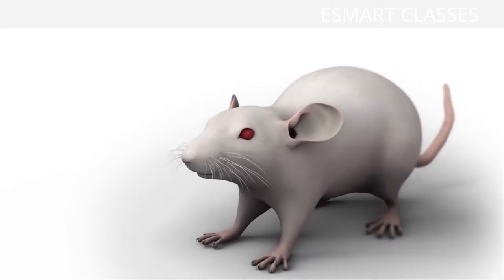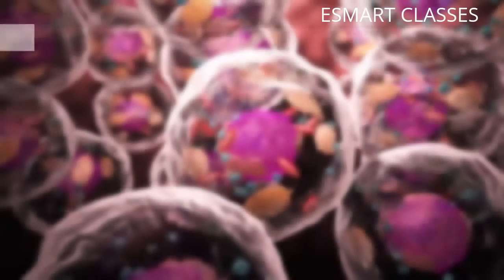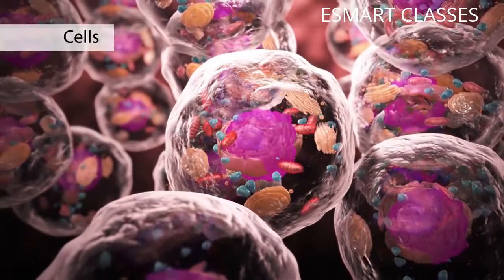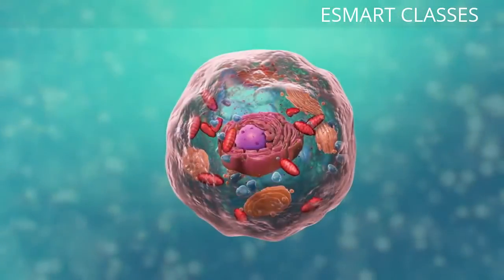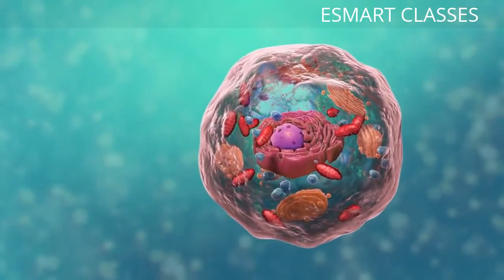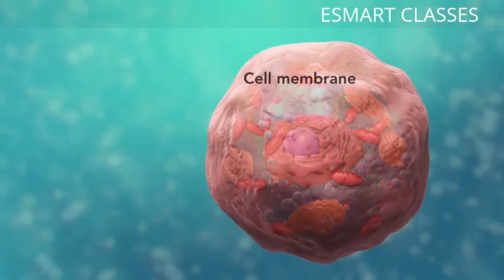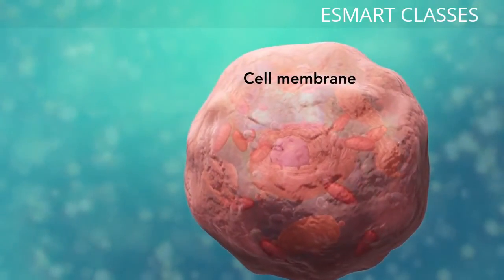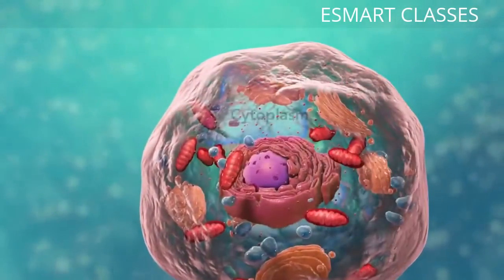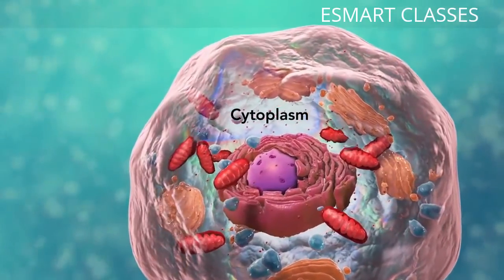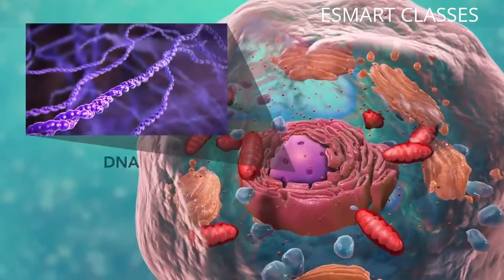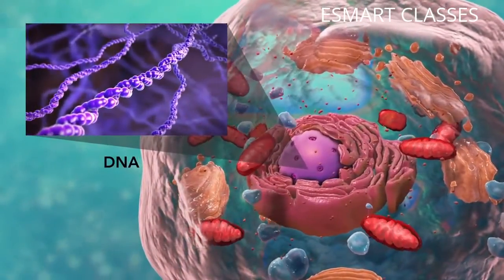Cells are the smallest living units of an organism. All cells have three things in common no matter what type of cell they are. All cells have a cell membrane which separates the inside of the cell from its environment, cytoplasm which is a jelly-like fluid, and DNA which is the cell's genetic material.